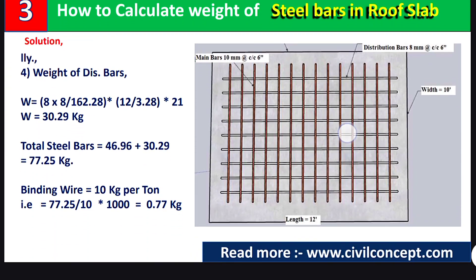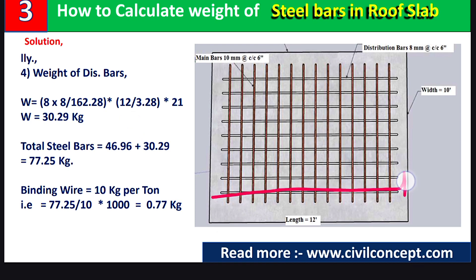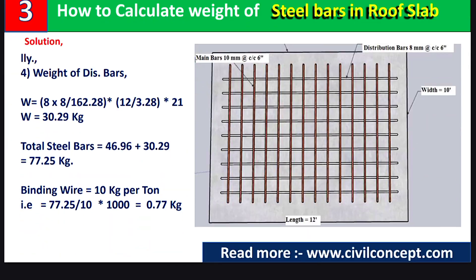Now we calculate the weight of distribution bars using the same formula: W equals d² divided by 162.25, multiplied by L. Here d equals 8 mm. The length of distribution bars is 12 feet, which we divide by 3.28 to convert to meters. The total number of distribution bars is 21. After calculating, the weight of distribution bars equals 30.29 kg.